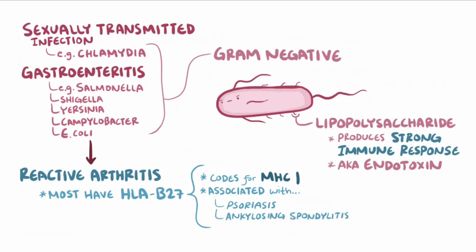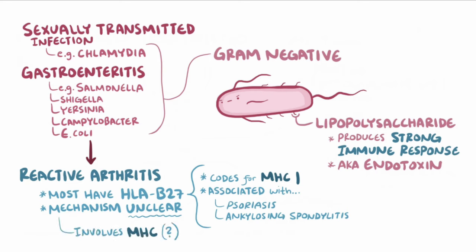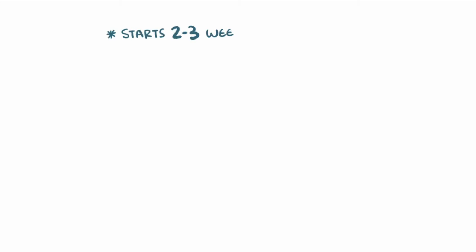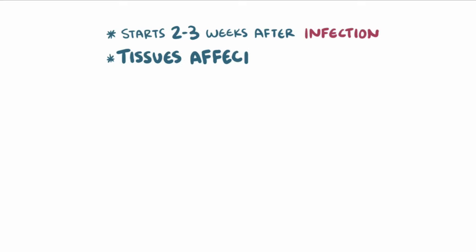Exactly how reactive arthritis develops is still unclear, but it probably has something to do with the way that lipopolysaccharides react with the MHC molecules on a cell surface. Because the immune system takes a little while to present foreign antigens and kick T-cells into gear, reactive arthritis often starts 2-3 weeks after an initial infection.